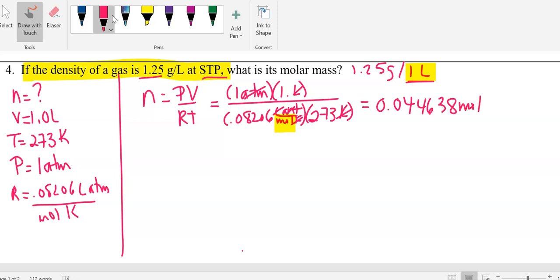Looking at 3 sig figs, 1, 2, 3, the third sig fig is right there. So we're going to say it's equal to 0.0446 moles.